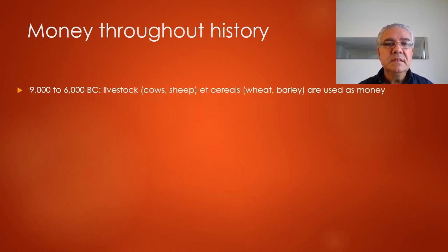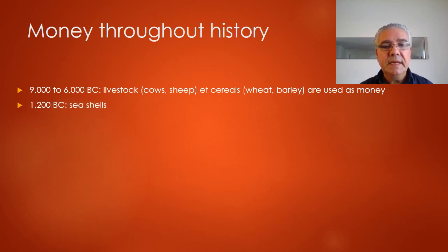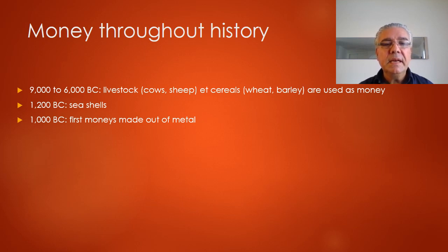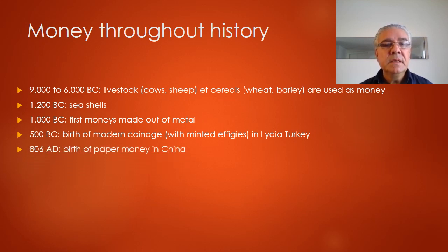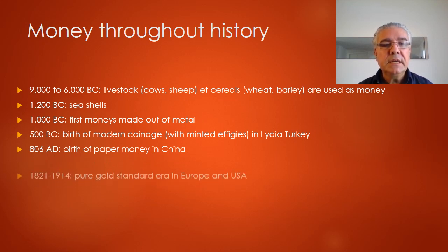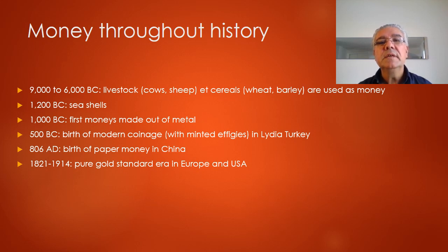Looking at particular dates: initially we have livestock and cereals being used, then seashells. The first money made out of metal is around 1000 BC. The birth of modern coinage in Turkey, in Lydia, with minted coins bearing the effigy of emperors is around 500 BC. And 800 AD sees the first paper money in China.